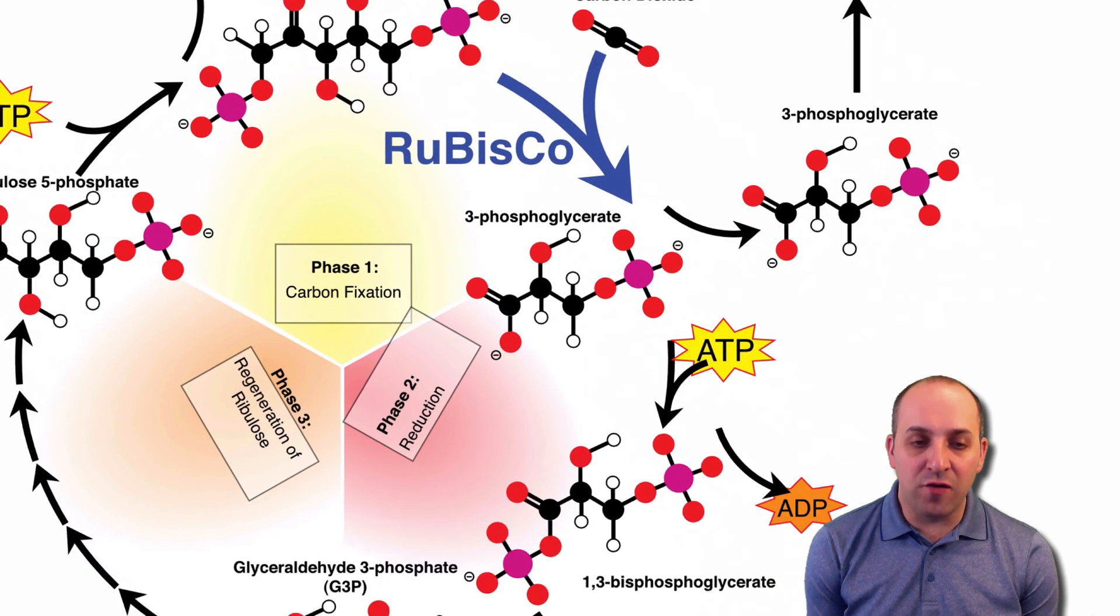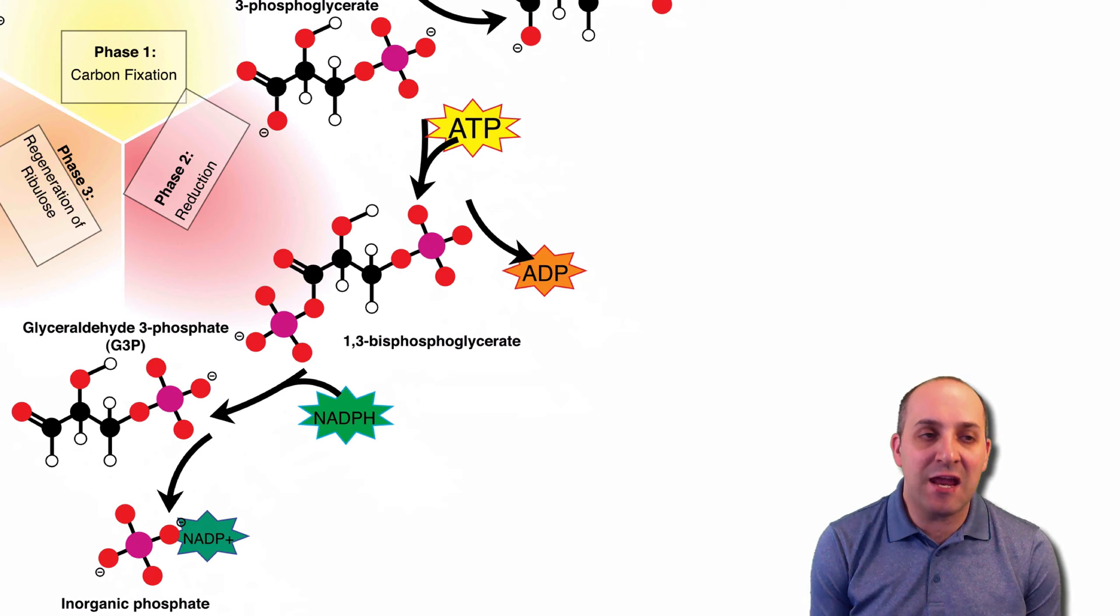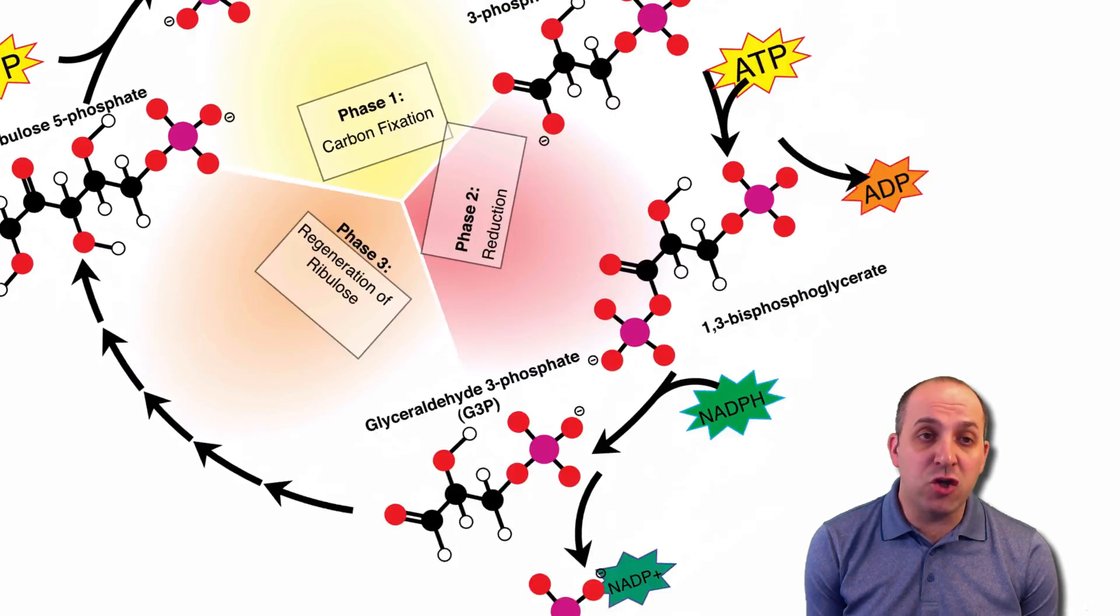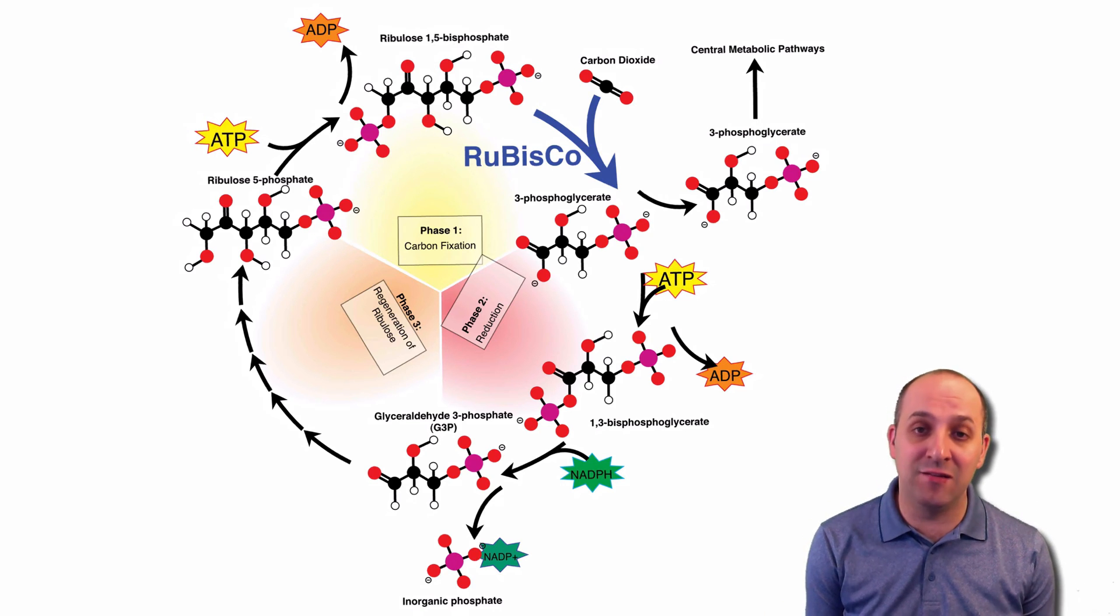The rest of the Calvin cycle is concerned with taking the molecules that are produced after carbon fixation and using the ATP and NADPH from the light reactions in order to convert those intermediary molecules back into ribulose 1,5-bisphosphate or RUBP so that the cycle can continue.